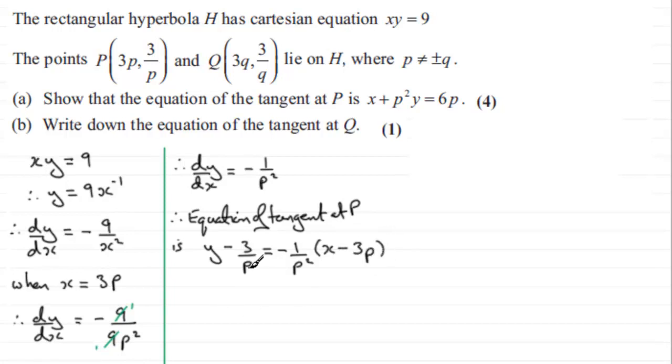So I want to get rid of the fractions here, the P and the P squared, so I'm going to multiply both sides by P squared. So if we do that, we therefore have P squared times Y. If I multiply this term by P squared, that P gets cancelled out with one of the P's in P squared, leaving me with minus 3P equals minus 1 multiplied by X minus 3P. So if I expand the bracket, I'm going to get minus X plus 3P. And all I need to do now is just add X to both sides and add 3P to both sides.